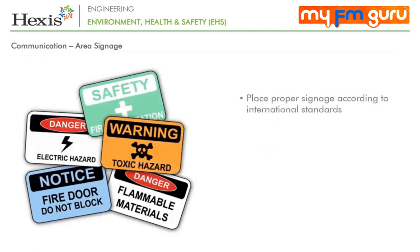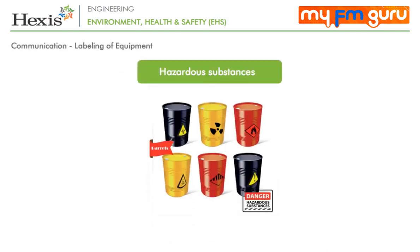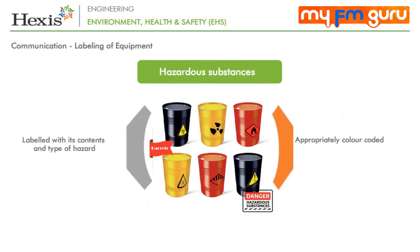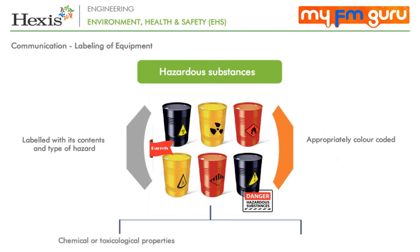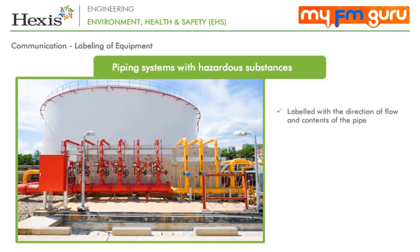Proper signage should be placed according to international standards so that workers, visitors and the general public can recognise and easily understand them. The proper labelling of any material or equipment is equally important to identify them quickly. By reading labels and using colour codes, one can know the contents, type of hazard if any, and chemical or toxicological properties including temperature or pressure of any substance. Piping systems that contain hazardous substances should be labelled with the direction of flow and contents of the pipe, and colour coded where passing through walls or floors.